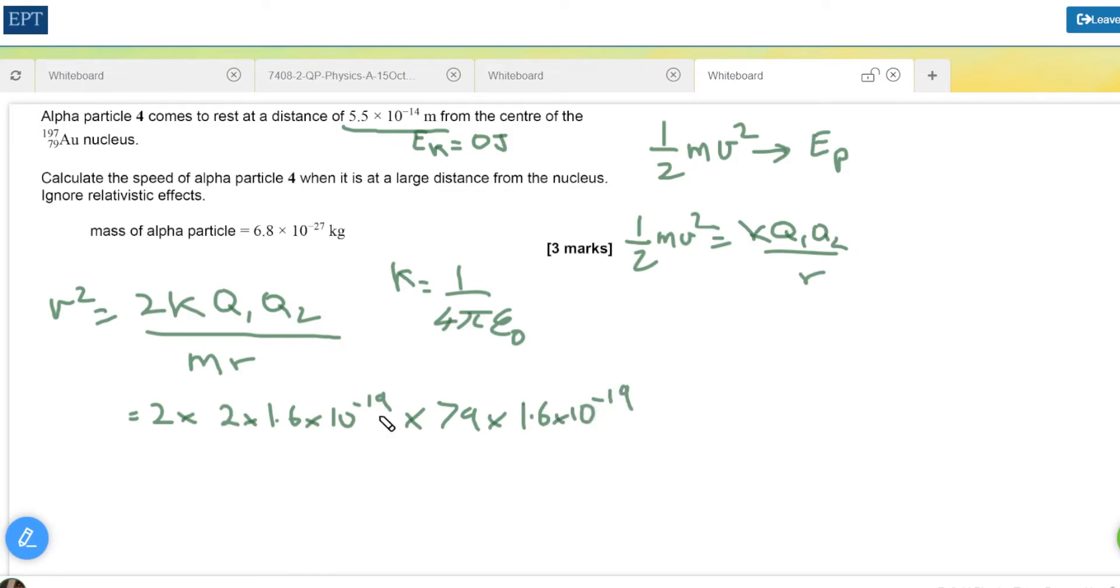Then underneath we have to divide by 4 times pi times epsilon 0 which is 8.85 times 10 to the minus 12, times the mass of an alpha particle which is given to us as 6.8 times 10 to the minus 27, times this distance of closest approach which is 5.5 times 10 to the minus 14.